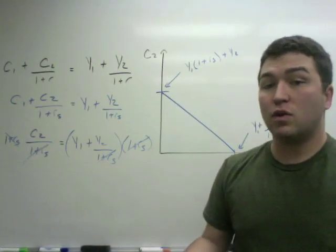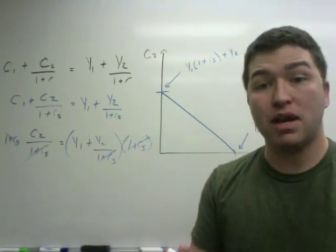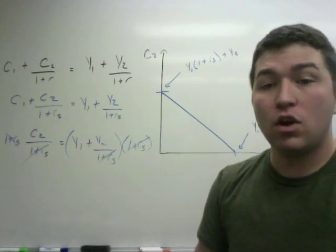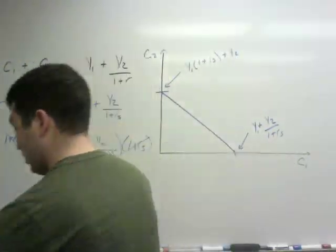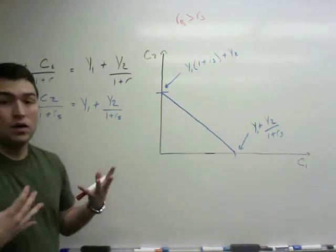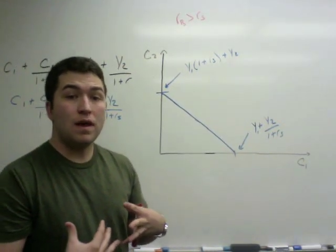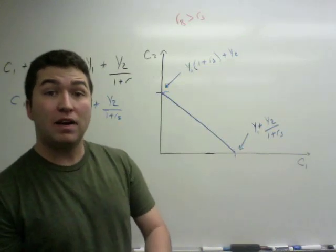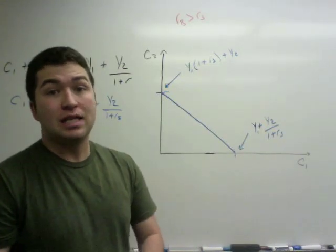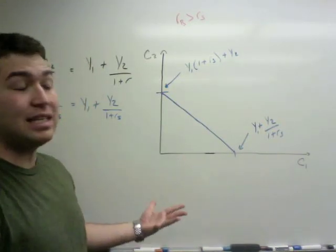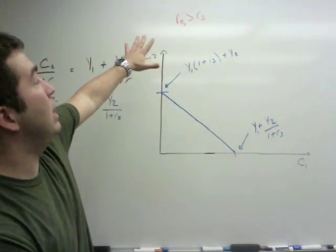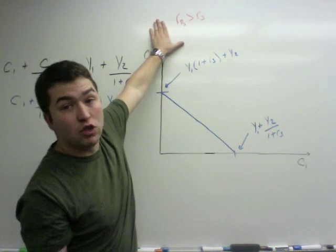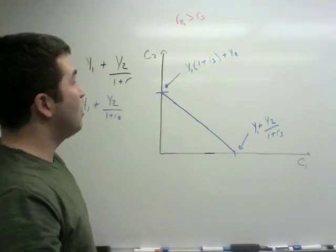We have just easily found the budget constraint for R S. Now this work is going to be exactly the same for R B. But what do we know? We know that R B is going to be greater than R S. So what does that mean for the maximum values for consumption period 1 and the maximum values for consumption in period 2, saying that this agent actually faces that R B versus that R S?